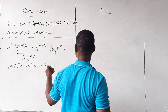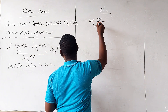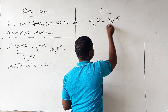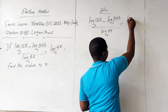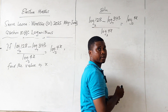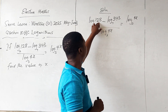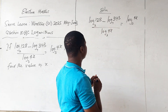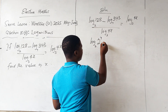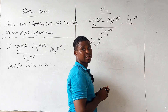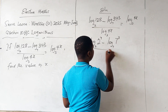So we have log 128 base 2 minus log 343 base 7, over log 4x base 3, equals log 4x base 3. Now, 128 can be written to the base of 2 as 2 to the power 7. So we write log 2 to the power 7 base 2. And 343 can also be written as 7 to the power 3, so we have log 7 to the power 3 base 7.